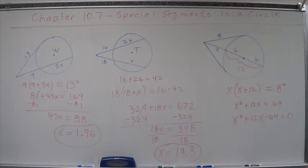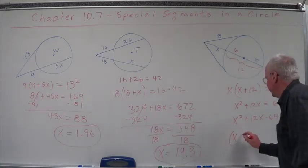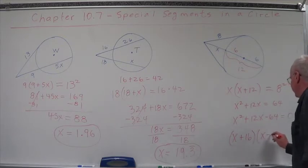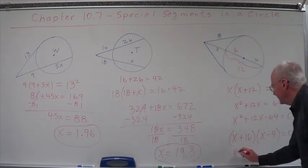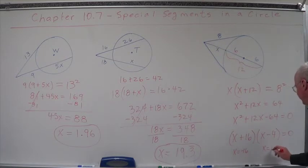I believe when you do that, you'll find that it looks something like this: x plus 16 times x minus 4 equals 0. What are our x's? Here x equals minus 16, here x equals 4.